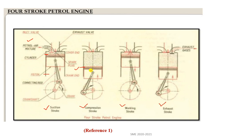In the compression stroke, the piston moves upward from BDC to TDC with both valves closed, compressing the air-fuel mixture. At the end of compression, the spark plug delivers a momentary spark, igniting the combustible mixture. A large amount of heat energy and gases are produced, forcing the piston downward from TDC to BDC — this is the working or expansion stroke.